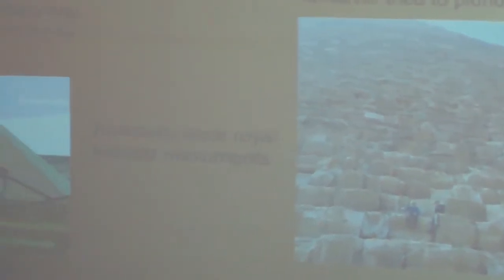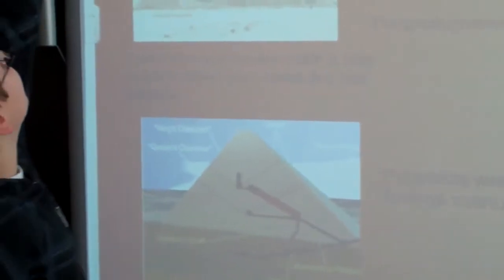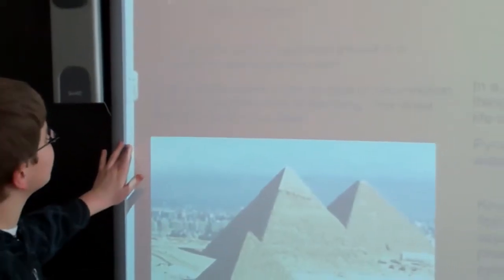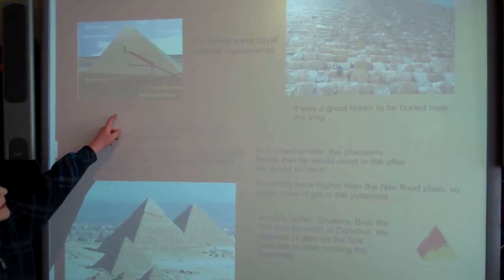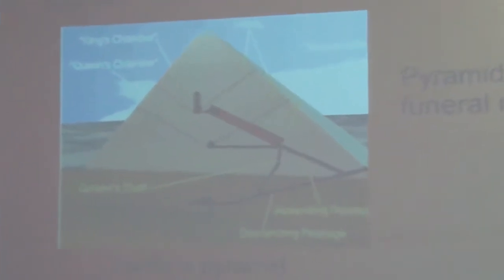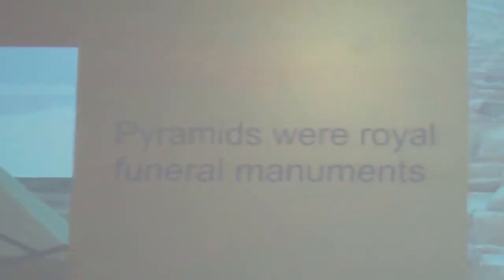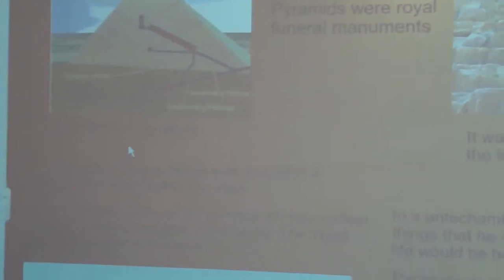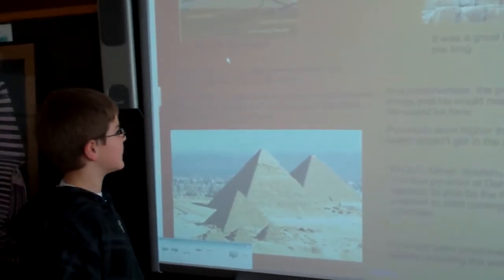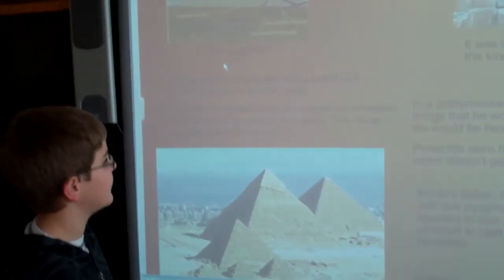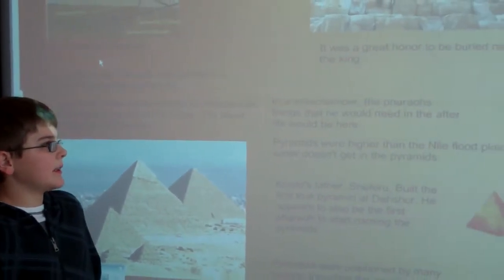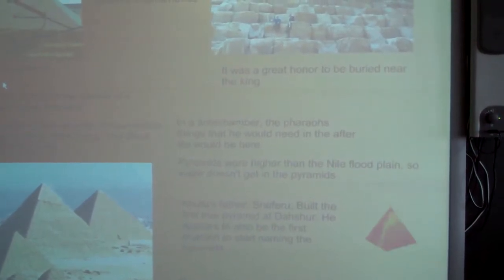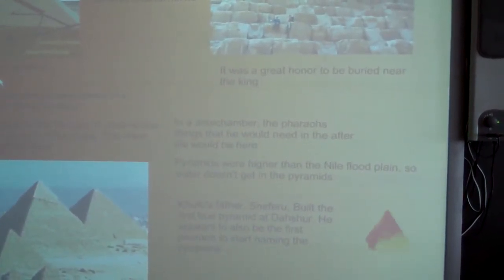It was a great honor to be buried near the king. This is what it would look like inside of a pyramid. A pharaoh's sarcophagus was placed in a burial chamber facing the west. The pyramids relate to the concept of resurrection. The east being the land of the living, the west being the land of the dead. In an empty chamber, the pharaoh's things that he would need in the afterlife would be here.